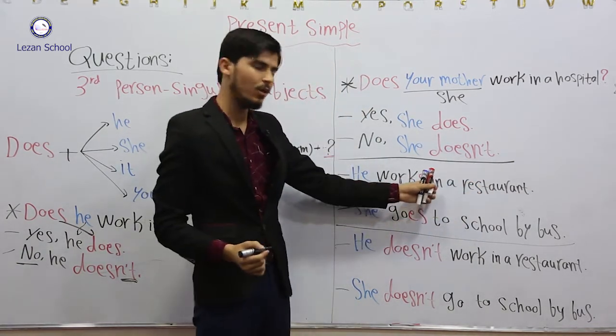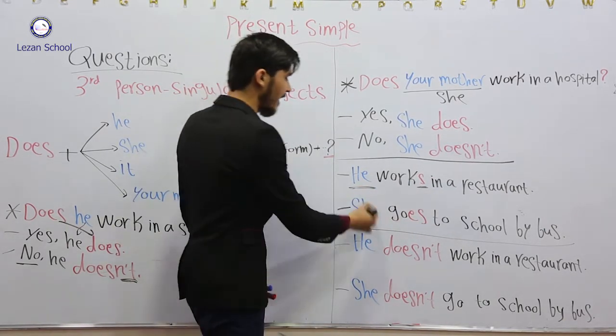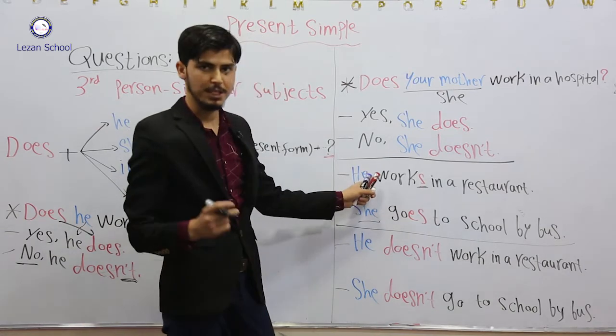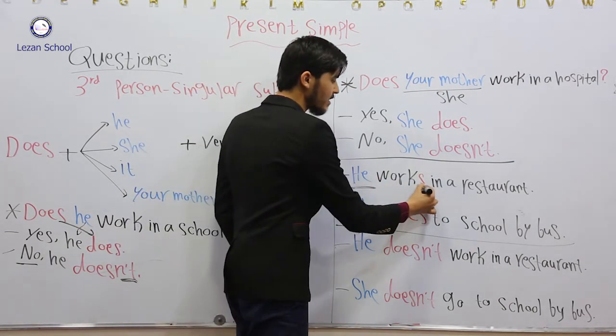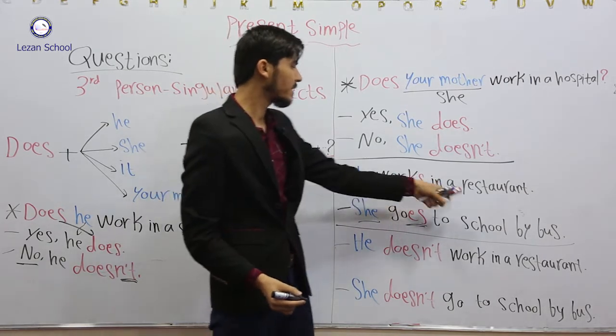Why do we add S or ES? Because the subject is third person singular - he and she. If the subject is singular, we add S or sometimes ES to the verb.